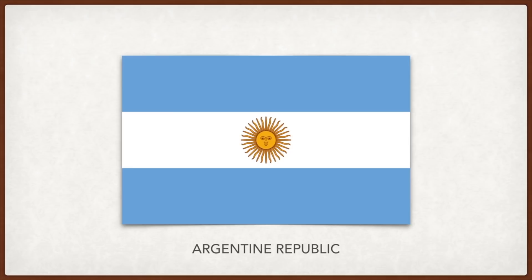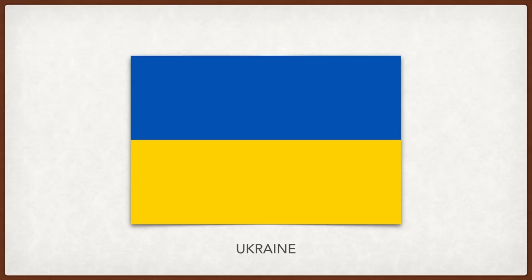Ukraine: the colors have a long history in Ukraine where they symbolized water and fire; they have come to mean the sky over wheat fields. Algeria: green and the crescent and star represent Islam, while white represents peace.